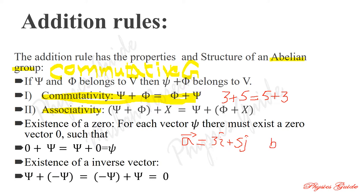A is 3i plus 5j and B is 5i plus 3j. When adding vectors, we can only add i-components with i-components and j-components with j-components. So A plus B: we write 3i plus 5j plus 5i plus 3j.